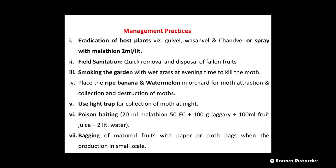Management practices: firstly eradication of host plants like gurvel, vasanvel, and sanvel, or spray with malathion 2 ml per liter. Then field sanitation — quick removal and disposal of fallen fruits. Smoking the garden with wet grass at evening time to kill the moth. Place ripe banana and watermelon in orchard for moth attraction, collection and destruction of moths at night, and also use poison bait.